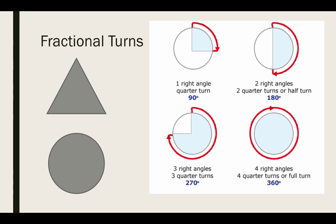Next we have fractional turns. A right angle is also known as a quarter turn which is just 90 degrees. A half turn which is also known as two right angles or two quarter turns is equal to 180 degrees. It can also be seen as a straight line.